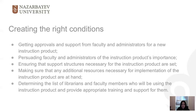For a successful implementation in an academic setting, creating the right conditions is crucial. For example, getting approvals and support from faculty and administrators, persuading them, ensuring that support structures necessary for the instruction products are set, making sure that any additional resources are at hand, and determining the list of librarians and faculty members and providing appropriate training and support for them.